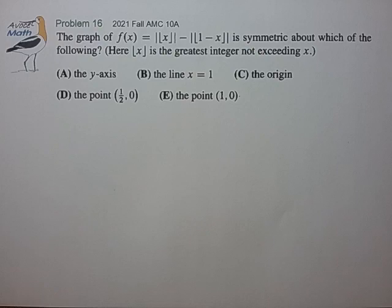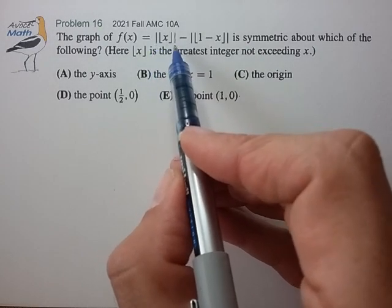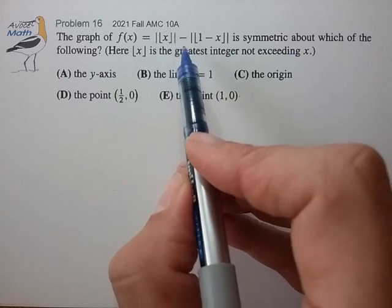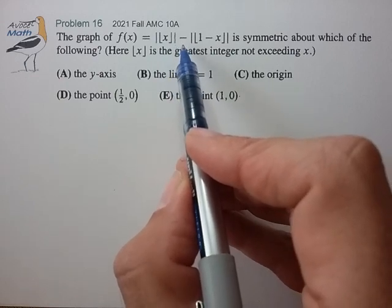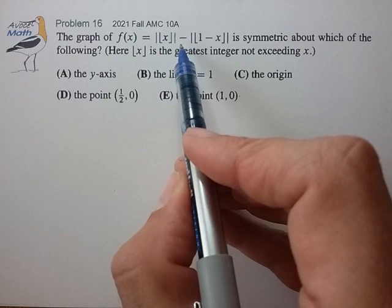Oh boy, this looks complicated. We have floor functions nested inside of absolute value signs, so this is too complicated for my brain, so I'm going to have to take a step back and look at something a little bit simpler.